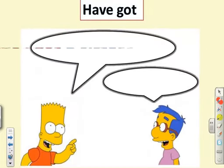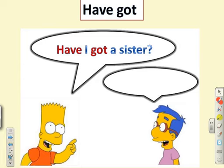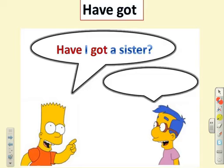Look at the next picture. Have I got a sister? How do you form this question? Start with 'have' at the beginning. What comes after 'have'? The subject — 'I.' What comes after 'I'? 'Got.' What do you put at the end? A question mark. So the question is: have I got a sister? You can answer yes or no.